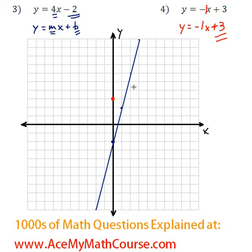And the slope is negative 1, so we go over 1, down 1, over 1, down 1, and so on. And again, I'm going to just draw a nice little line here. There we go. So that is y equals negative x plus 3. That's it.